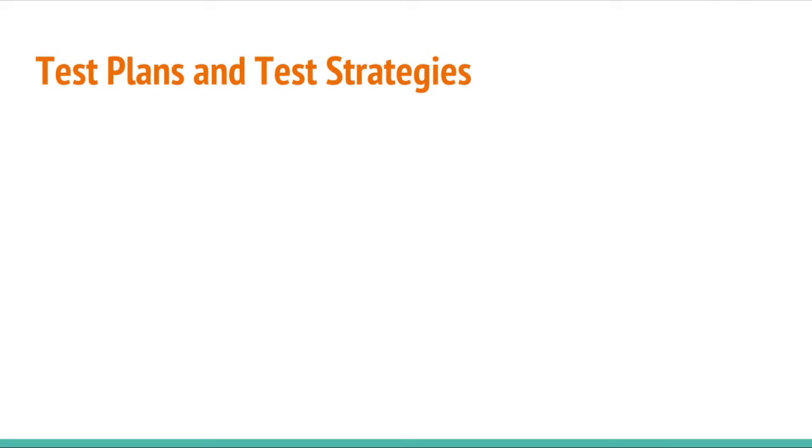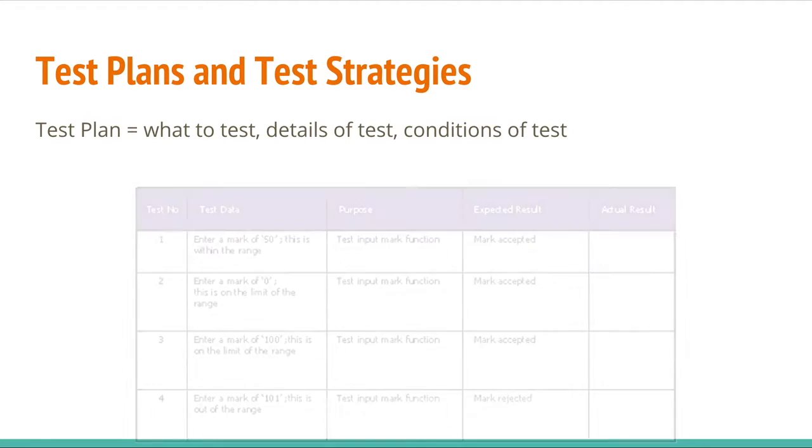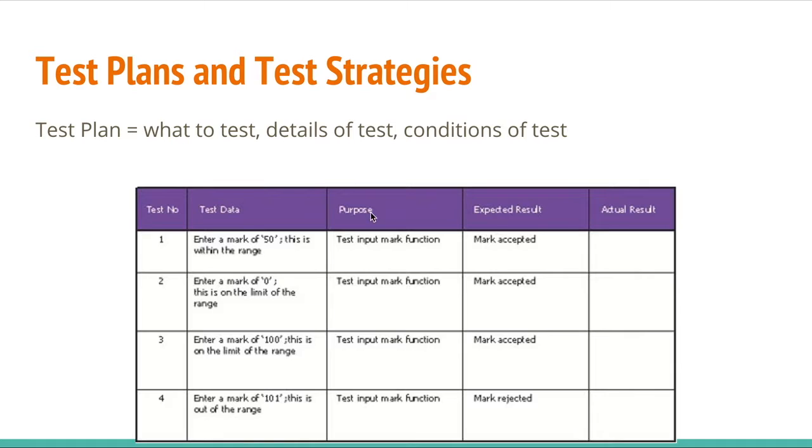So, test plans and test strategies. What's the difference between them? A test plan is basically what you're going to test, the details of that test, and what conditions you're going to do the test under. And the test plan looks like this. So, you've got the test number, test data, test purpose, expected result, and the actual result is done when you actually do the testing. This is just a test plan.